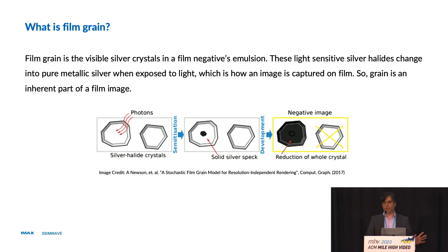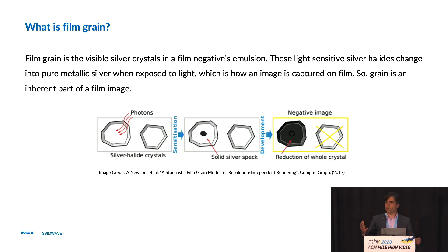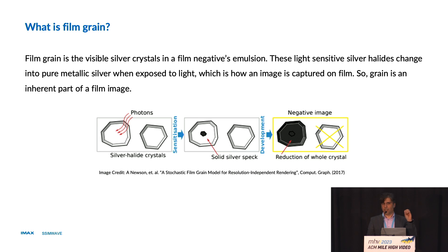So the big question is: what is film grain and why is it important? In film, there is an emulsion on top of each layer. There are silver halide crystals in that emulsion. Some of those silver halide crystals, when exposed to light, turn into real metallic silver. So when you go from negative to positive, you see some of those silver halides that have become metallic silver — it appears like a film grain or noise. That is the signature of film grain.